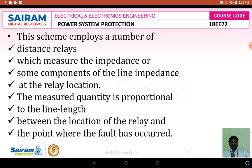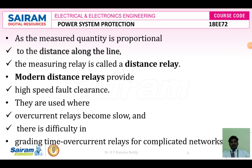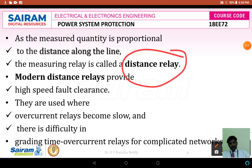Since the measured quantity is proportional to the distance along the line, the measuring relay is simply called a distance relay. Modern distance relays provide high-speed fault clearance. They are used where overcurrent relays become slow and where there is difficulty in grading time overcurrent relays for complicated networks. For complicated networks, it is difficult to identify which kind of overcurrent relay is suitable, and in such cases we can use the distance relay.